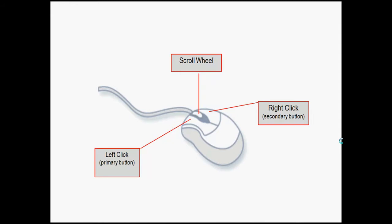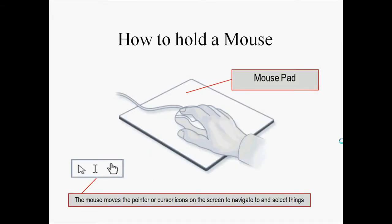Many mice also have a scroll wheel in the middle, which you can experiment with later. But mostly, what you'll do with the mouse is move it around on the table or on a mouse pad and press the left button — the left click. You hold the mouse by laying your hand gently over it. For a right-handed person, the index finger falls naturally on the left button area. When you lay your hand on the mouse and move it, keeping the button side facing the computer, it will move a pointer or cursor on the screen.